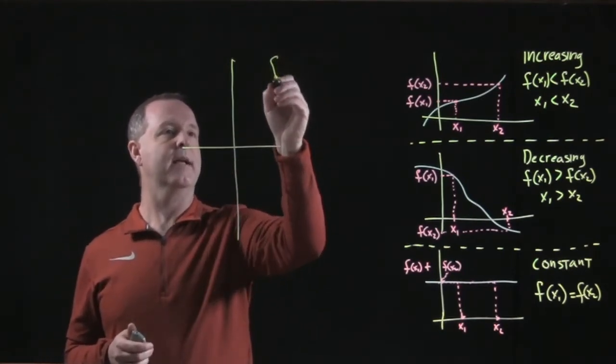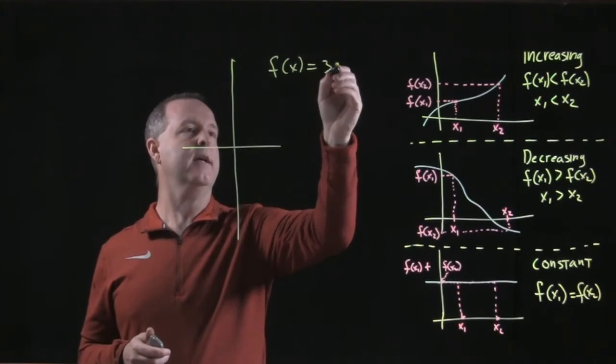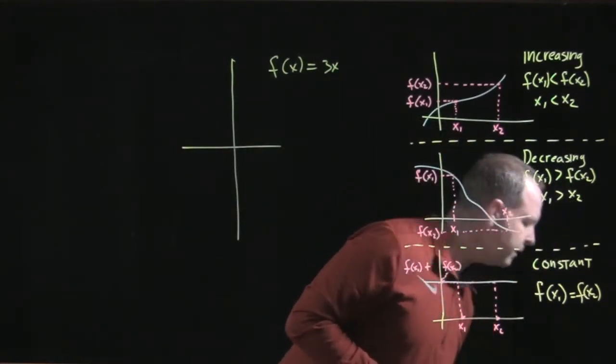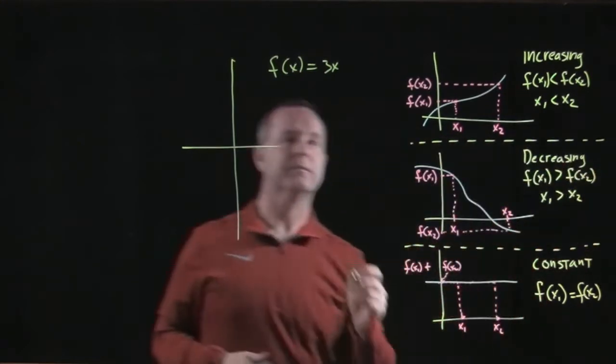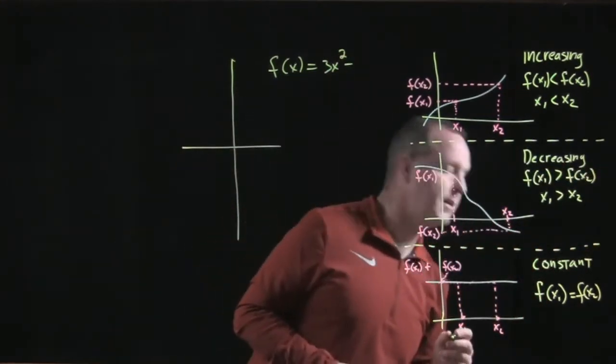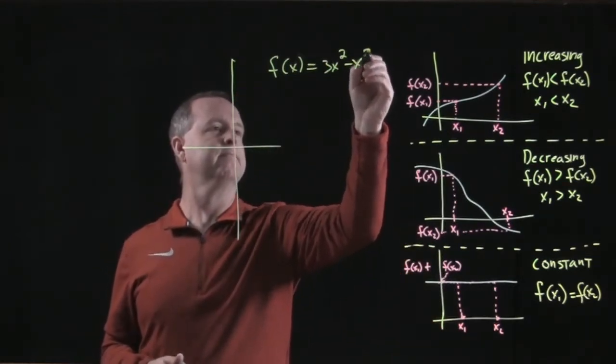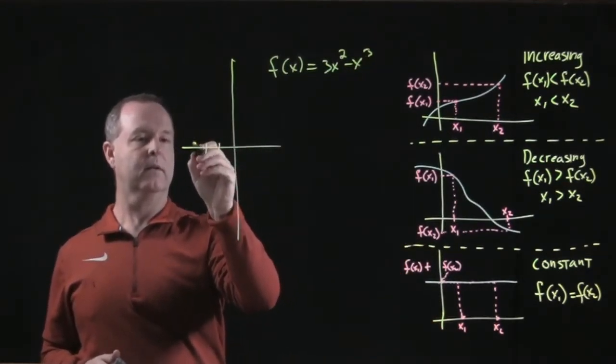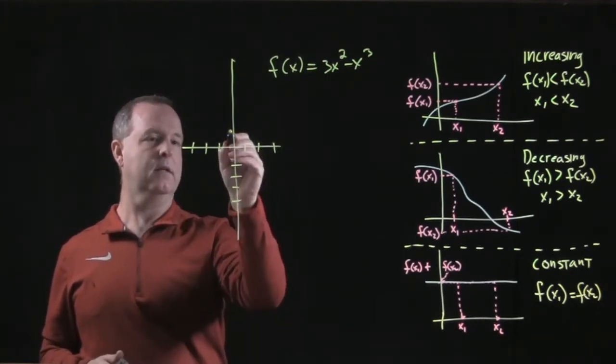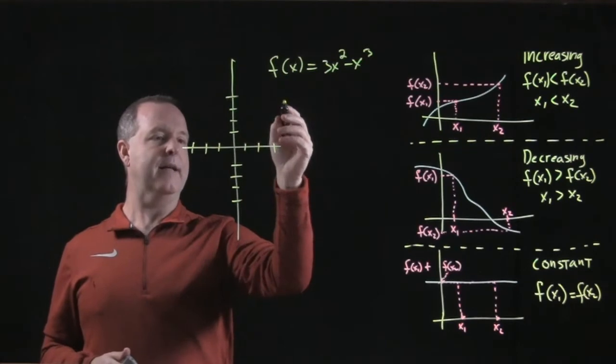Let's look at f(x) = 3x² - 3x - x³. That graph roughly looks like this.